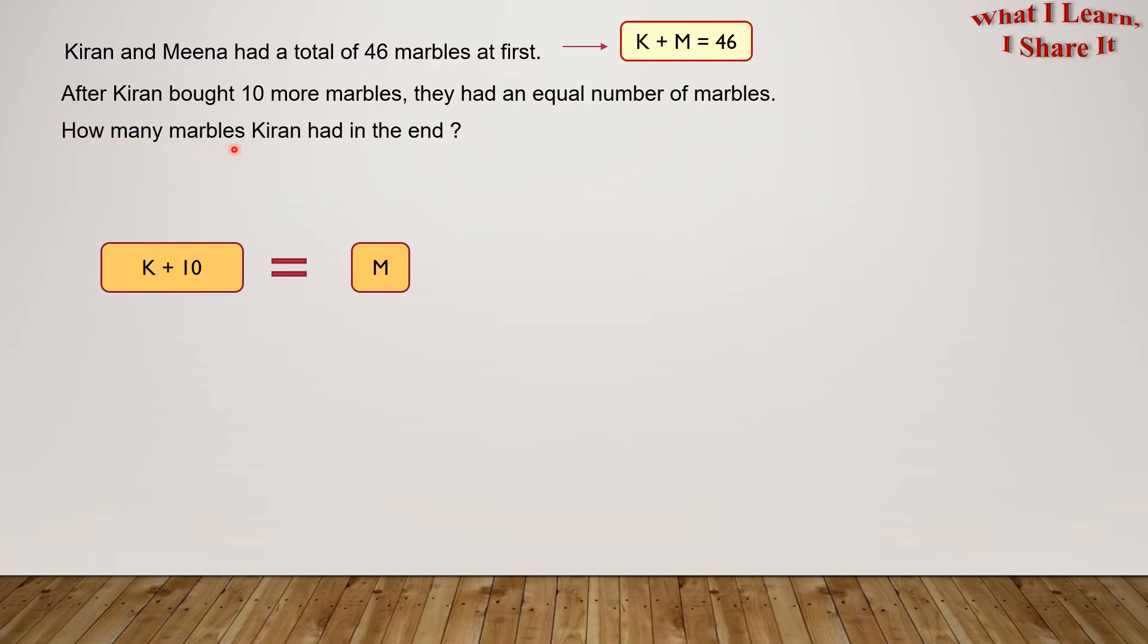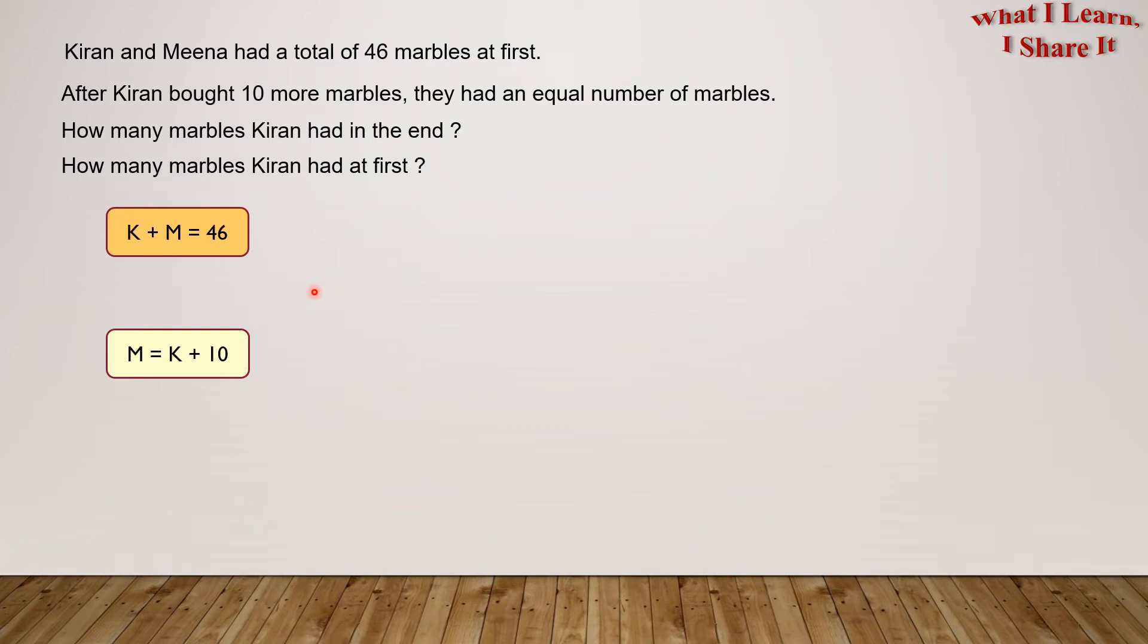How many marbles Karen had in the end? How many marbles Karen had at first? Since we have to find Karen's marbles, let's substitute M with K plus 10 in the equation above. Let's substitute M's value from this equation into this equation. And we'll get K plus K plus 10 equals 46. K plus K will become 2K. Now our equation will become 2K plus 10 equals 46.